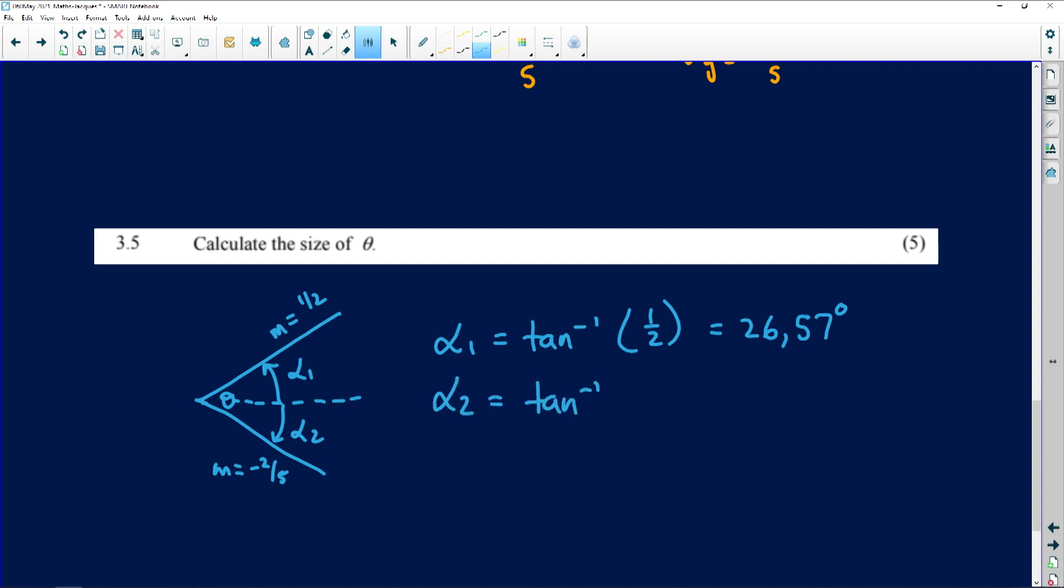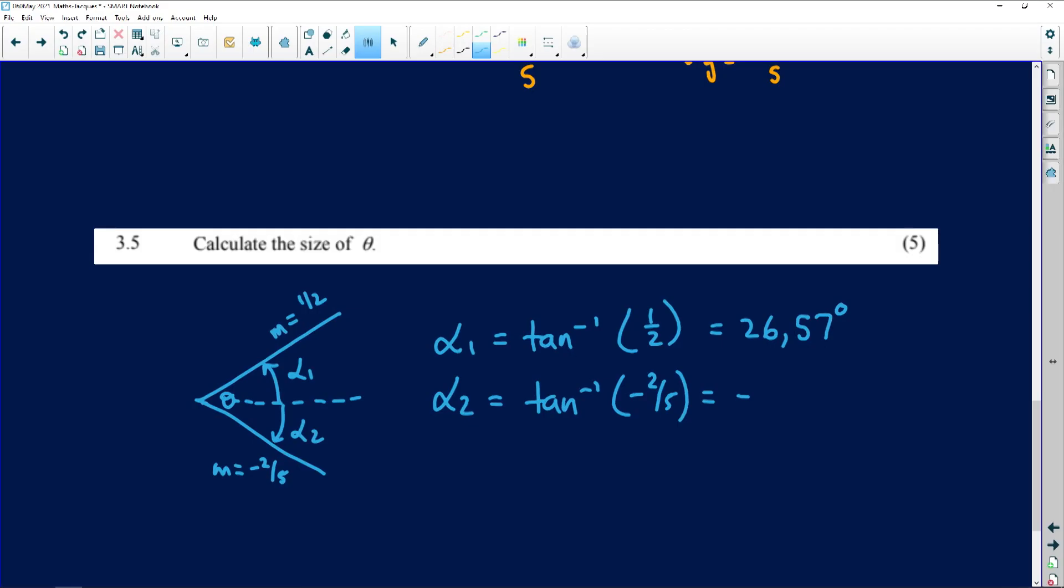For alpha 2, something interesting is going to happen. I have a negative gradient folks, and that will, if I put it into my calculator, the tan angle is going to be negative, which means it's in the fourth quadrant. You get the answer as minus 21.8, and it's because of the direction in which we're measuring it. So the angle theta is going to be the 26.57 degrees plus 21.8, not negative 21.8, 21.8. And that gives you 48.37 degrees for that angle.